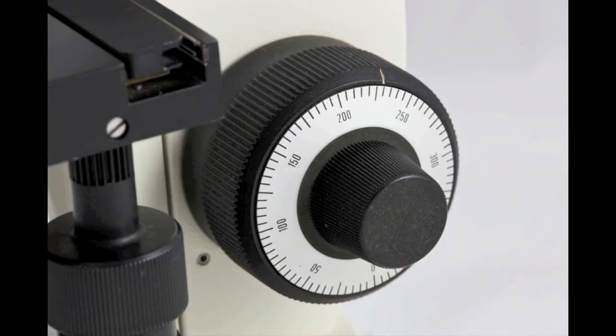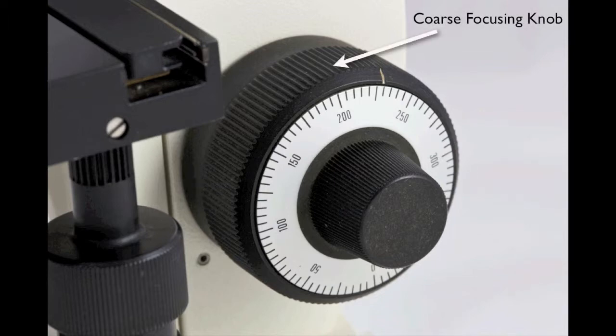Focusing is accomplished by two knobs, which are located on the arm. The outermost knurled ring is the coarse focusing knob. Turning this knob will move the stage up or down rather rapidly, which is appropriate when using the scanning or low-power objectives.